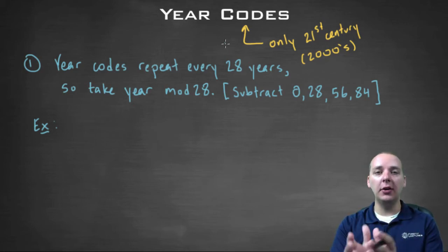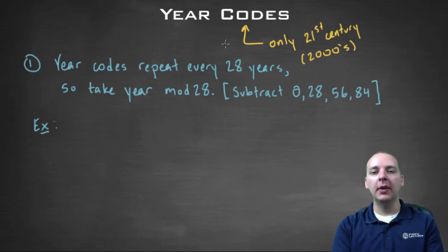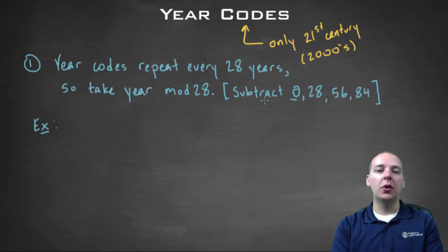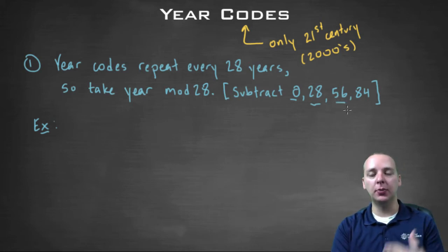So what we can do is we can take our year modulo 28 and what that means is you'll either subtract nothing if it's already 2000 to 2027. Or if it's above that you would subtract 28. If it's much higher than that you might have to subtract 56 or two multiples of 28 or 84 which is three multiples of 28. So let's try a couple.